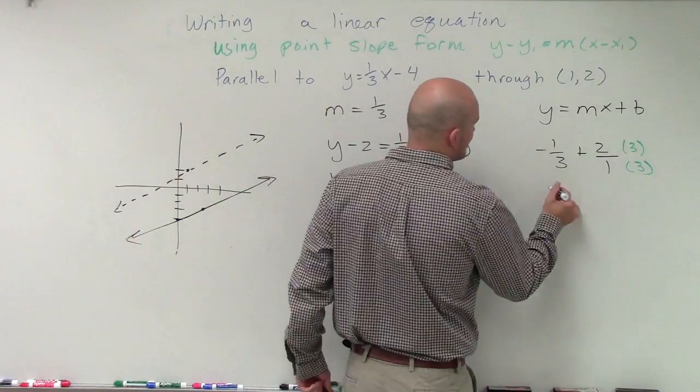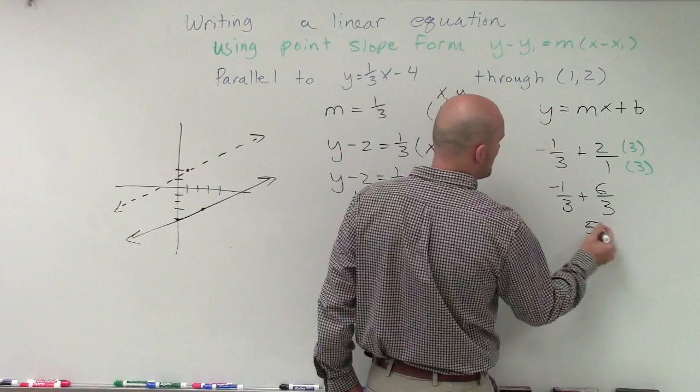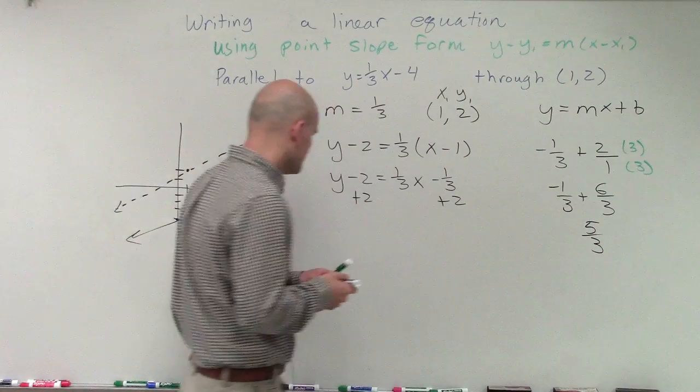Therefore, I'm going to have negative 1 third plus 6 thirds, which ends up equaling 5 thirds.